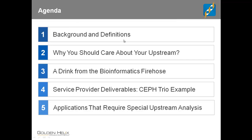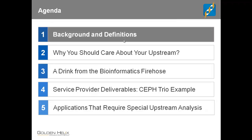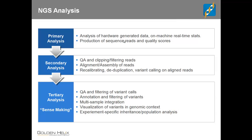Let's get to some common terminology. I want to define these things so we can talk about primary, secondary, and tertiary analysis without ambiguity — but not give you an NGS 101 background. I'll assume some level of experience there. Here's how I'm defining these three stages that your data goes through when looking at next generation sequencing data.